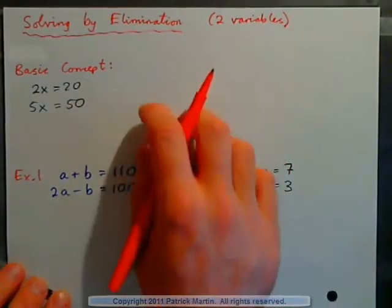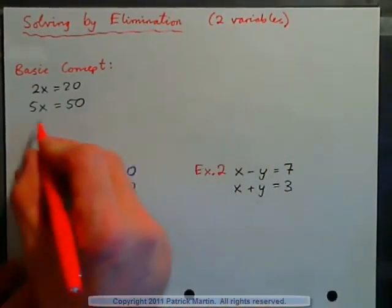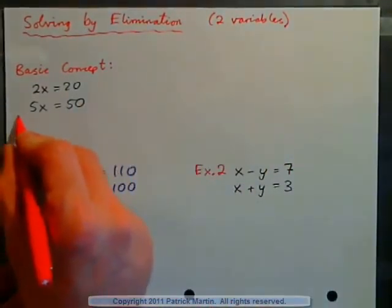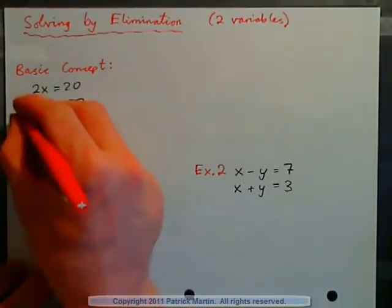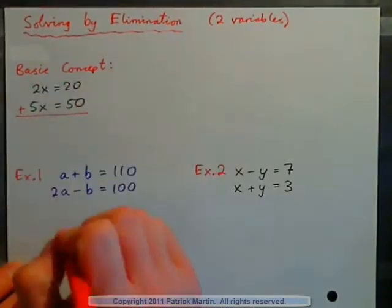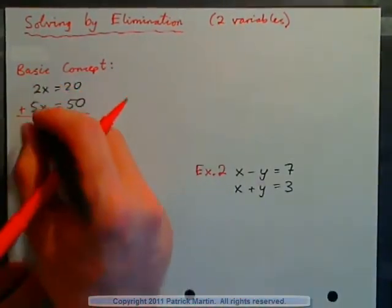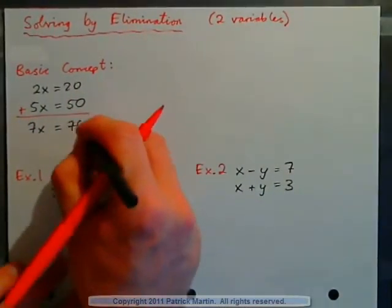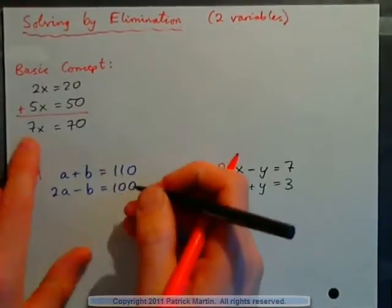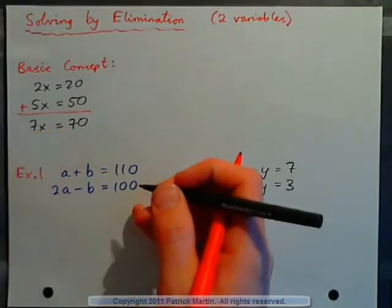The basic concept of solving by elimination — it might seem simple, but it's useful. We can add equations together. So I can add both of these equations together and get 2x plus 5x is 7x, equals 20 plus 50, which is 70. This last equation makes sense because x is 10.